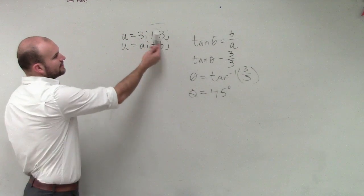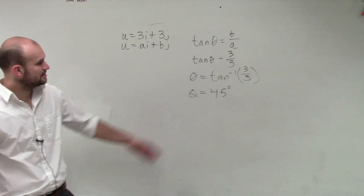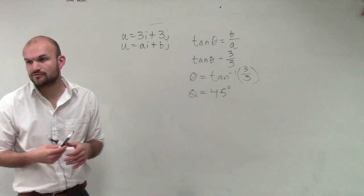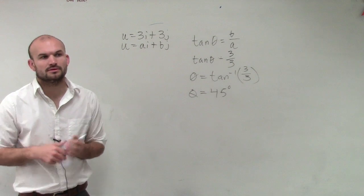Then we look at our point. It's in the first quadrant. We have our direction of our angle is 45 degrees. We are all good.